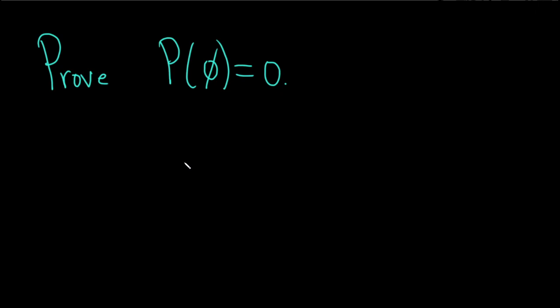In order to do this, we are going to use the axioms of probability. I'm going to briefly recall what those are. Axiom 1 says that the probability of any event A is greater than or equal to 0 for all events A.